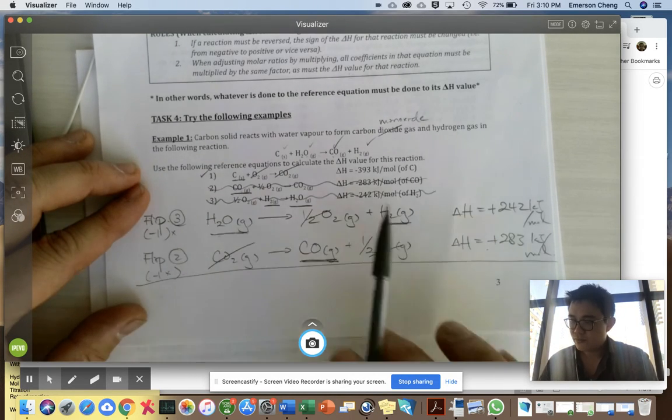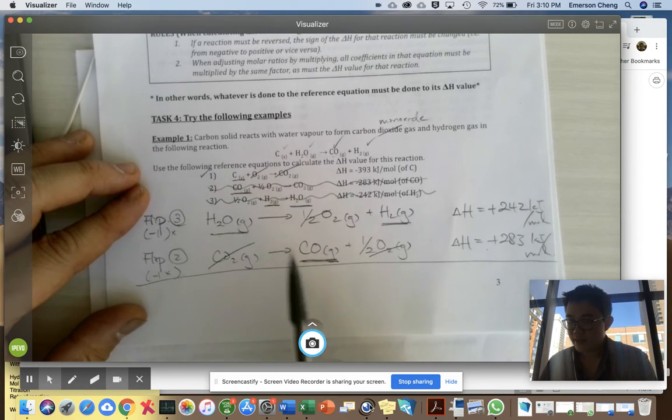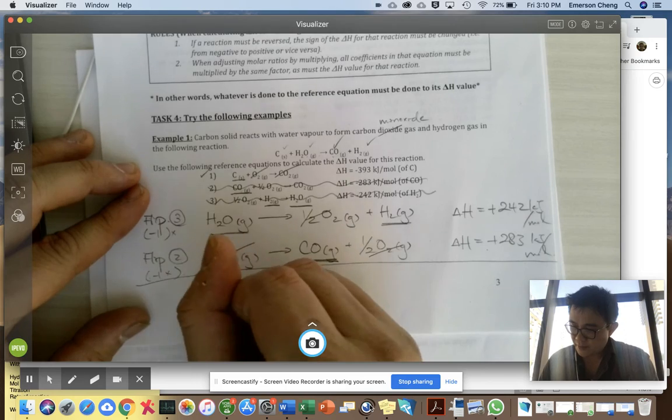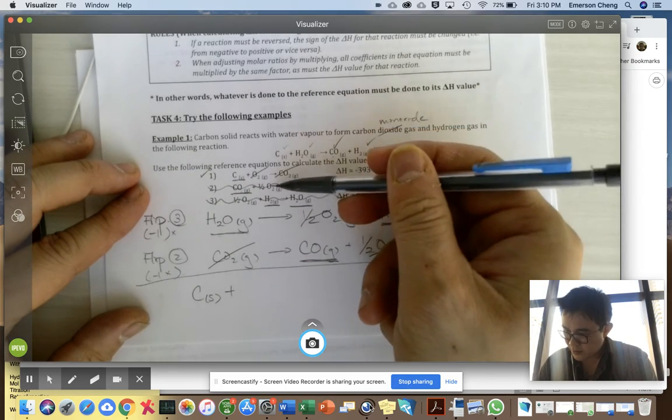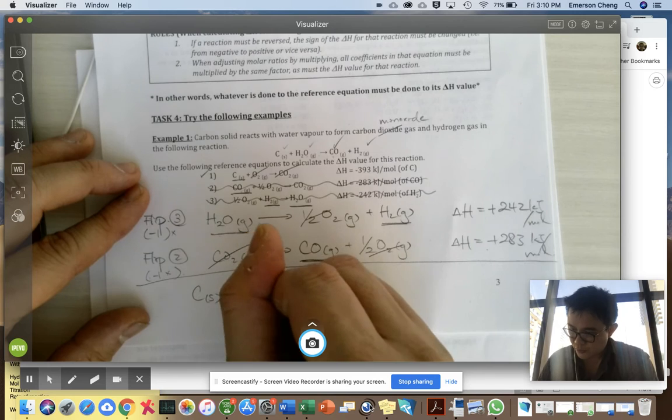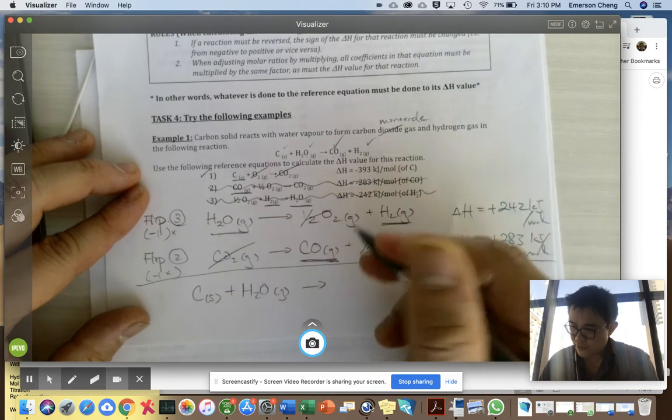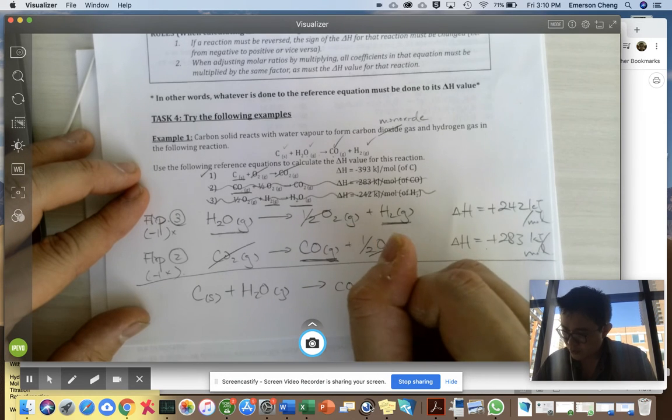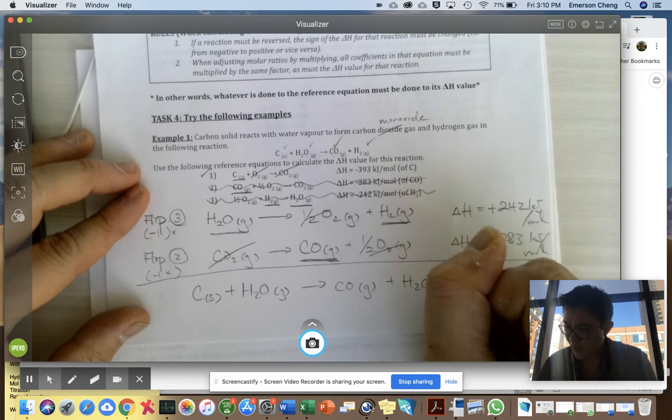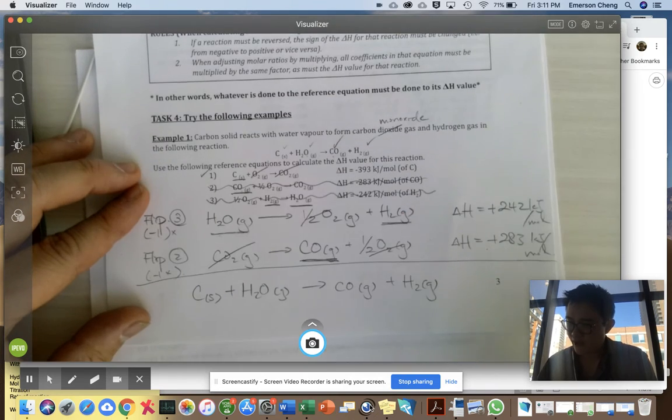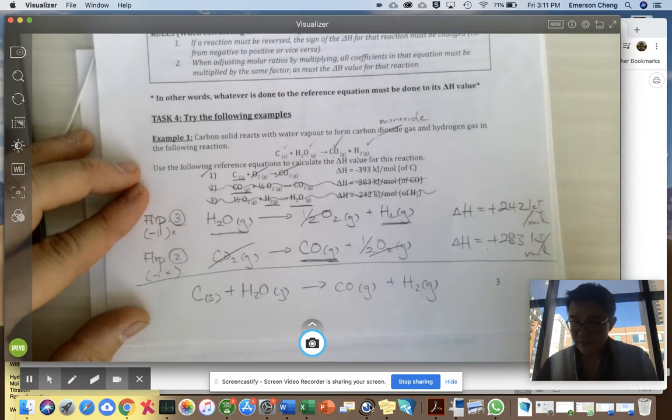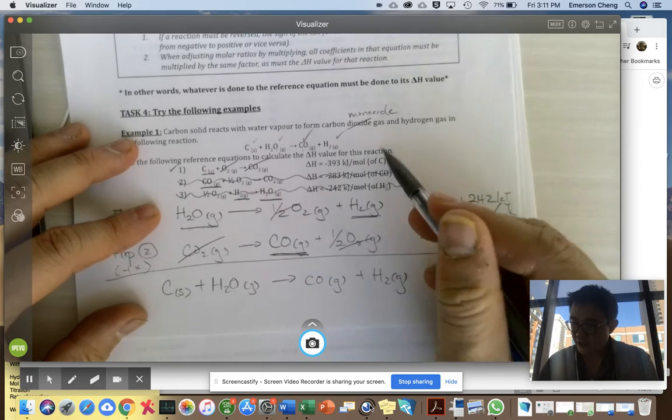So now you write down all the survivors, the molecules that survived the purge. So carbon plus H2O gas gives you CO gas plus H2 gas. Oh look, that's the same equation as what we have over here. So in this case that's what we want. We want to get back to the same equation as this. So to define the delta H for this reaction.